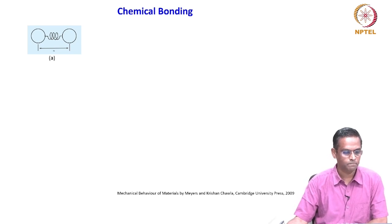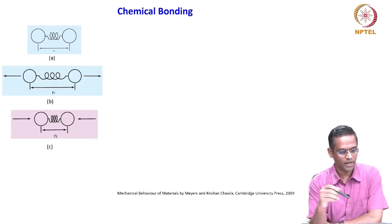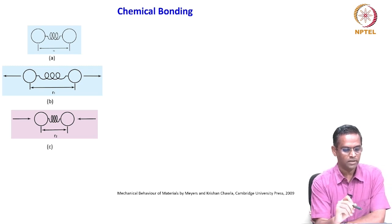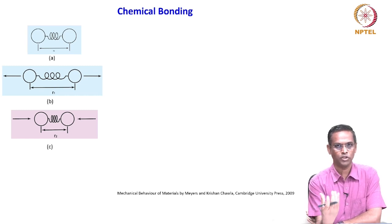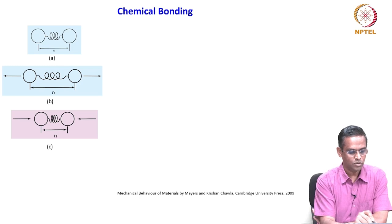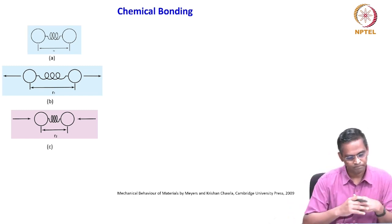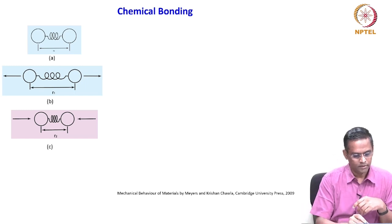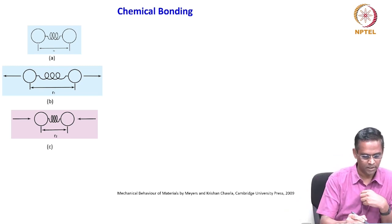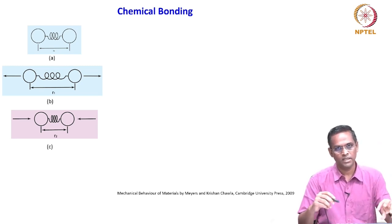Here is a model: consider two atoms held by some imaginary springs. The distance between these two atoms is R₀ — the two atoms are held together in an equilibrium or stable position. All this deformation is within elastic limits — we are talking about elastic deformation.